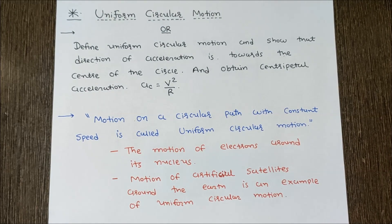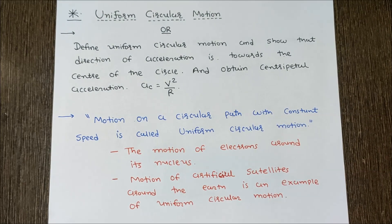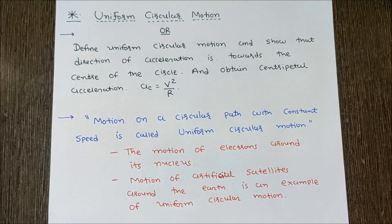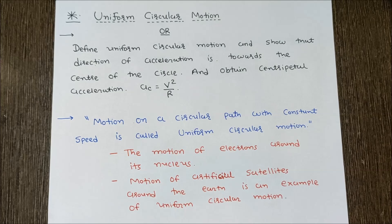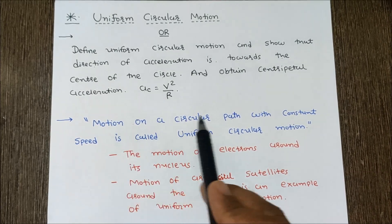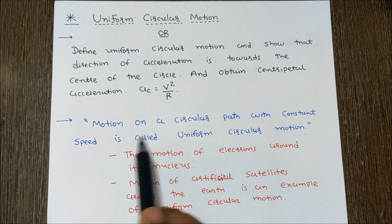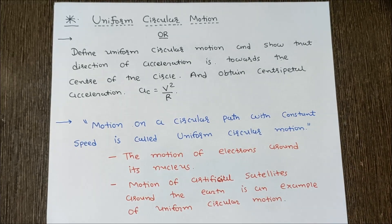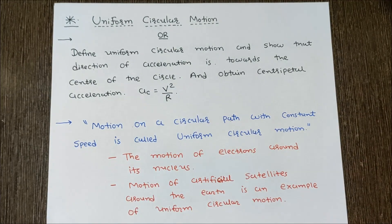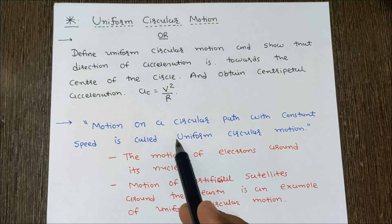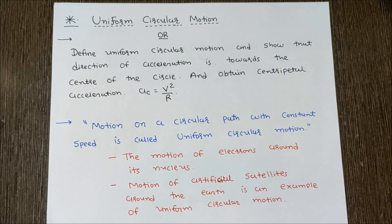So first: what do you mean by uniform circular motion? Circular motion means motion on a circular path, and uniform means constant speed. So motion on a circular path with constant speed is called uniform circular motion.